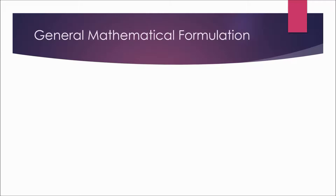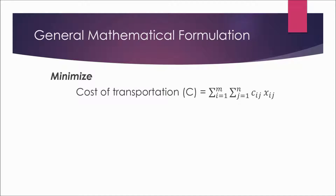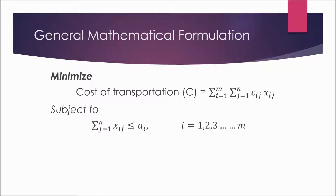The general mathematical formulation is represented as a minimization problem. We have to minimize the total cost of transportation, which is given by the product of the unit cost of transportation and the units transported. We use double summation because we have two suffixes i and j.